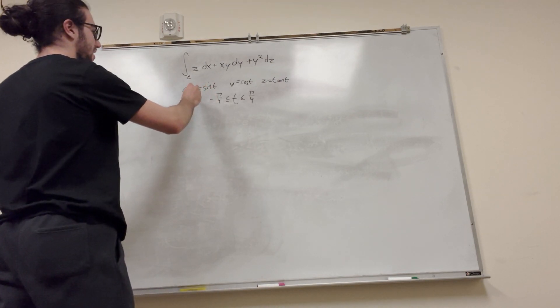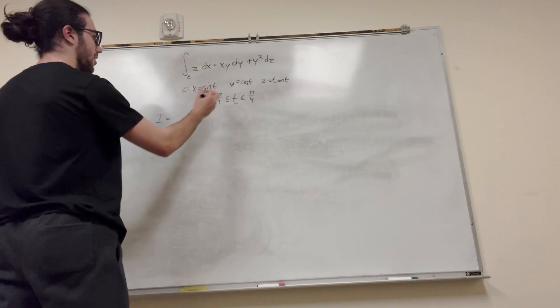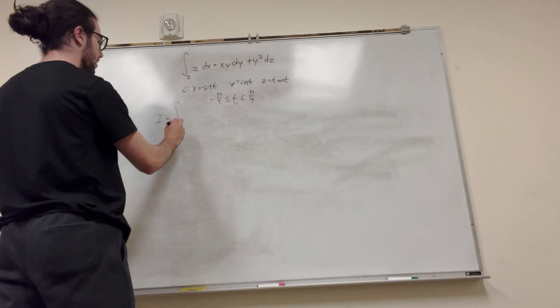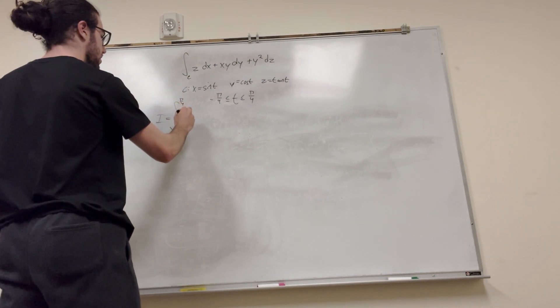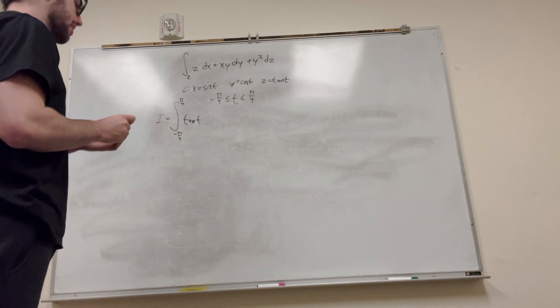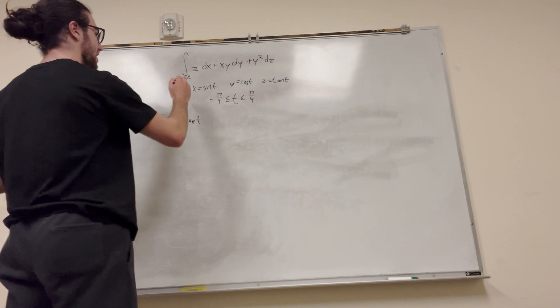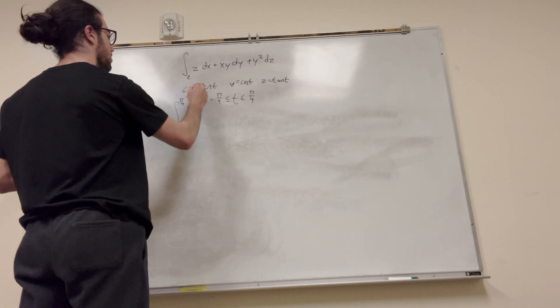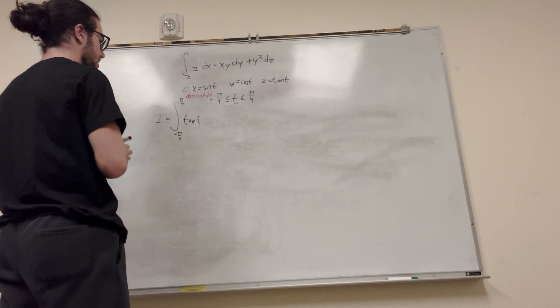So conveniently, they gave us these nice things. x is equal to sine of t, so let's set up an integral. So it goes from negative pi over 4 to pi over 4. So z becomes tangent of t. But then we have a dx. Now what do we do with the dx? Well, what we actually do is you take the derivative of x with respect to t. So dx is equal to cosine of t dt, right? So we put that in there.